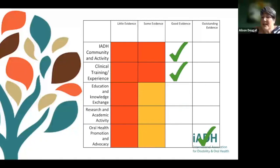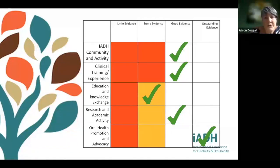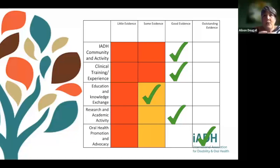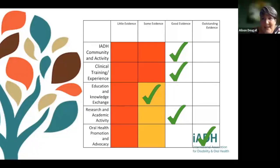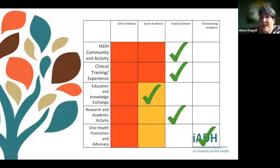Compensation between domains is possible, and this is very important when you receive your feedback. If you haven't passed one domain, you can choose over two years to increase your activity in that domain if it nearly met the threshold, or put all your efforts into becoming outstanding in something else. It may be easier to achieve outstanding in community action than to get a research project completed. Your feedback is really important.